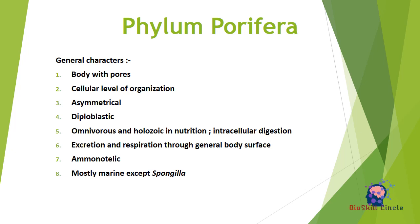The third characteristic is that these organisms are asymmetrical — they have no symmetry, meaning the body cannot be divided into two similar parts from any direction or plane. These organisms are also diploblastic, meaning they have two germ layers in the embryo. The outer layer is called ectoderm and the inner layer is called endoderm. Between these germ layers, an undifferentiated, non-cellular, and gelatinous mesoglea is present.